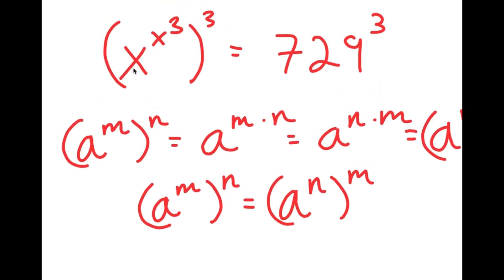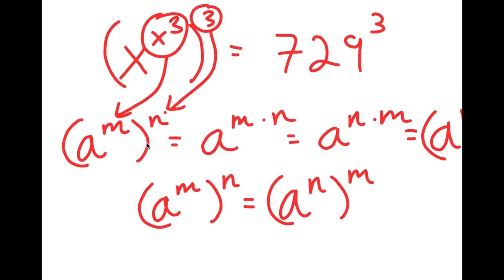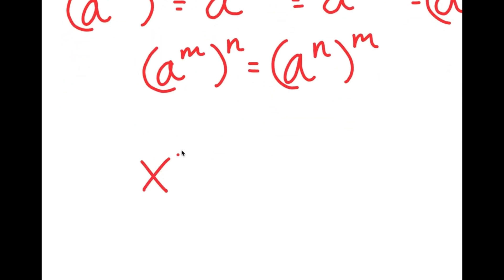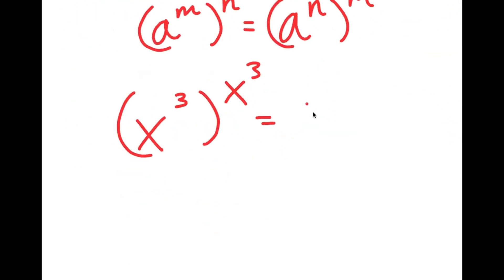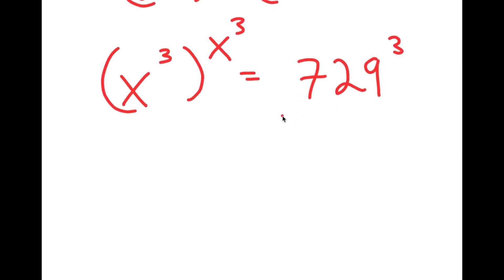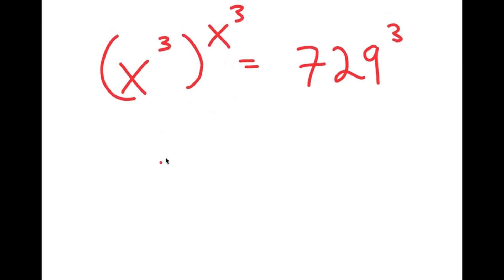So now from here, I have x to the power of x to the power of 3, to the power of 3, and I can think of x to the power of 3 as m and 3 as n. So if I switch the places of these two, I get x to the power of 3 to the power of x to the power of 3. And remember, this is equal to 729 to the power of 3. So now from here, I'm going to let x to the power of 3 equal to the variable y.